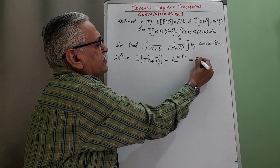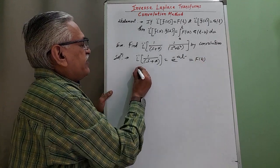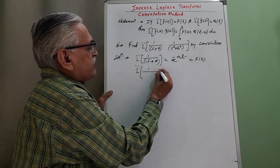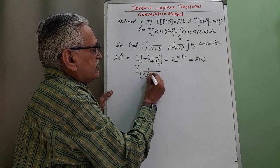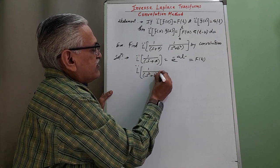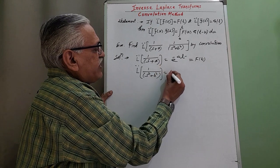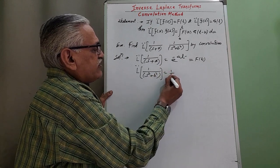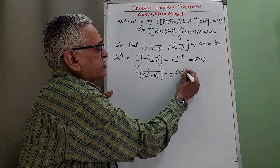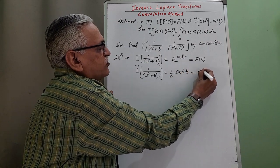And inverse Laplace of the second term 1 upon s square plus b square, again by standard result 1 by b sin of bt, and we call this as g of t.